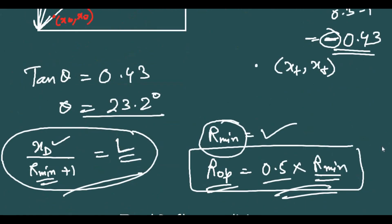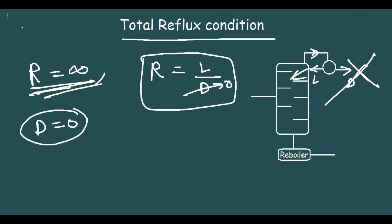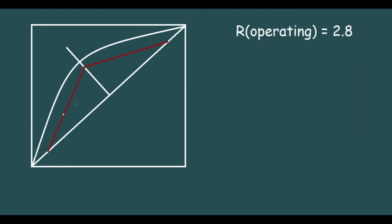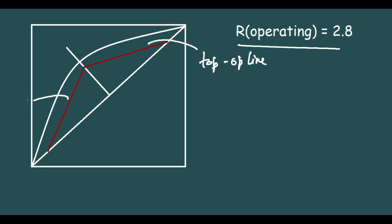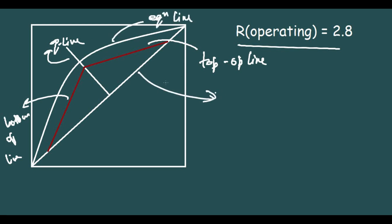Let's consider a graph with the two operating lines drawn in red. The R_operating is 2.8 — just an assumed number. We have the top operating line, the bottom operating line, the feed line (Q line), the equilibrium line, and the diagonal line. The diagonal line helps identify the points XW, XW; XF, XF; and XD, XD — all of which lie on it since their x and y coordinates are equal.